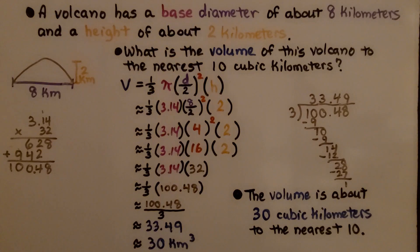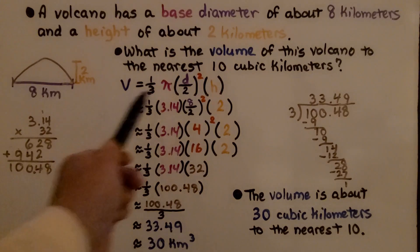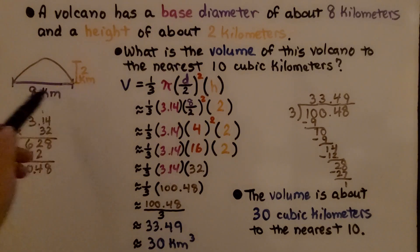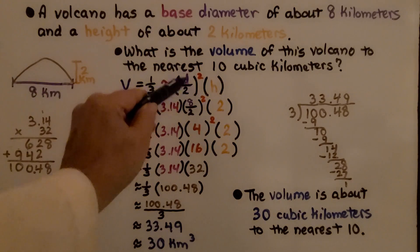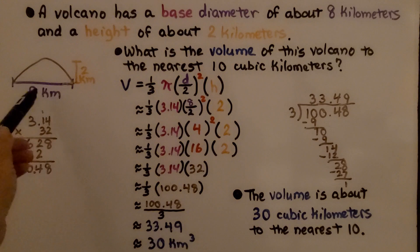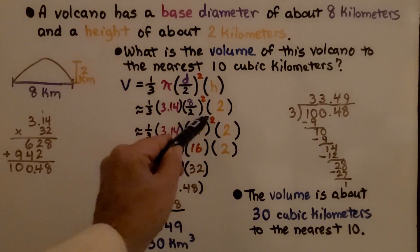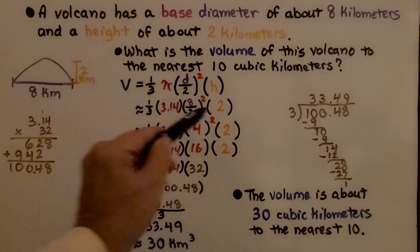Let's try another one. A volcano has a base diameter of about 8 kilometers and a height of about 2 kilometers. What is the volume to the nearest 10 cubic kilometers? We have our formula with d divided by 2 squared because we were given the diameter. We need to figure out the radius. That means we're going to have 8 divided by 2 squared, which is 4 squared. Our height is 2.